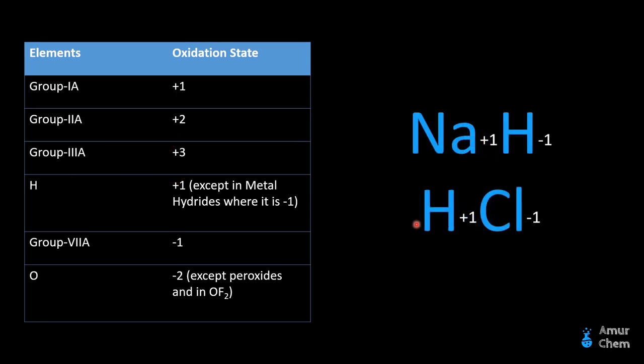The next one is hydrogen. Hydrogen exists in positive 1 as well as negative 1 oxidation state, as in the case of metal hydrides. A metal hydride is a compound containing a metal attached to hydrogen — for example, sodium hydride. Sodium belongs to Group 1A, so it will lose its valence electron and form a positive 1 charge, and to neutralize the molecule, hydrogen will acquire a negative 1 oxidation state.